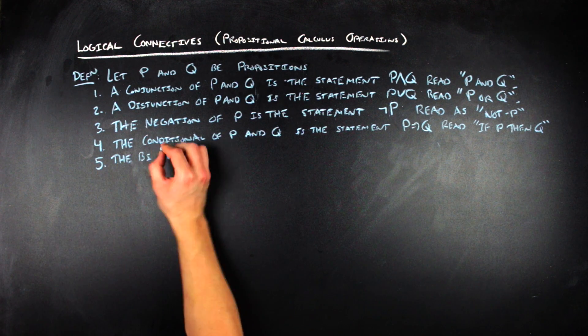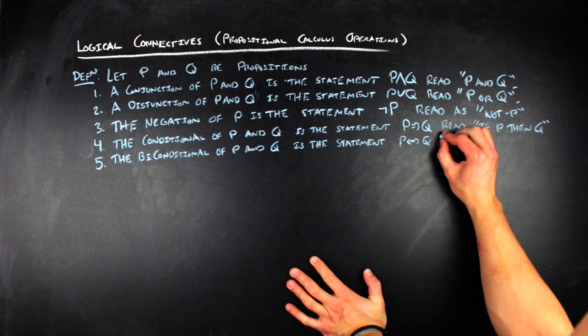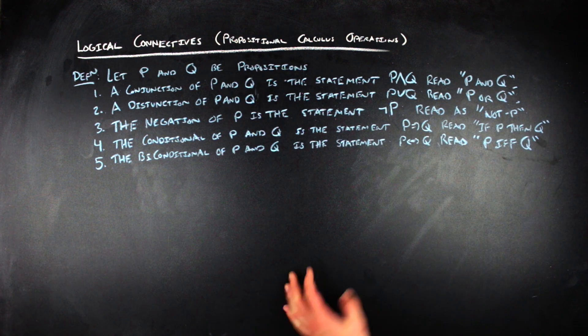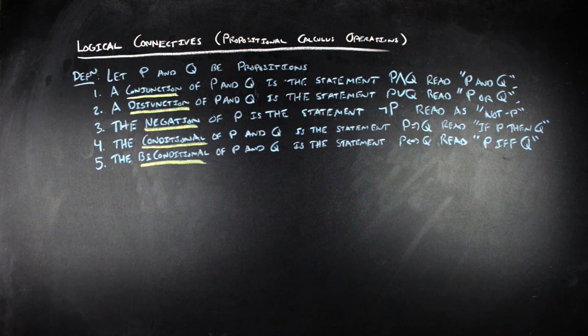And then lastly, five, the biconditional formed from P and Q is the statement P double arrow Q. And that's read as P if and only if Q.